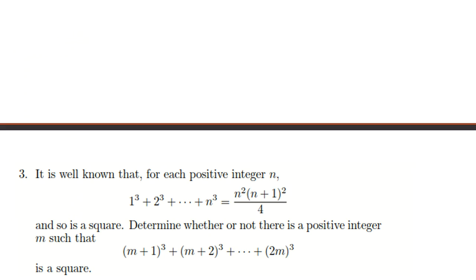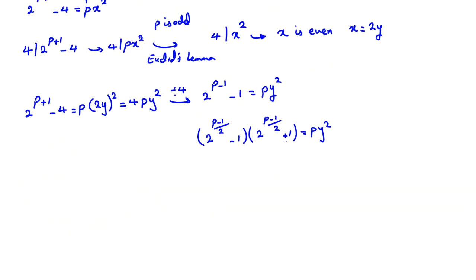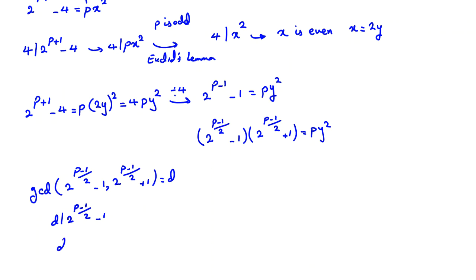BMO 2017–2018 Round 2 is also homework for you since the idea is the same. When we have a product of two things equal to a perfect square or a prime times a perfect square, we consider the GCD. Let d = gcd(2^((p-1)/2) - 1, 2^((p-1)/2) + 1). Since d divides both, d divides their difference, which is 2. But both numbers are odd (even ± 1), so d is odd, meaning d = 1. They are relatively prime.